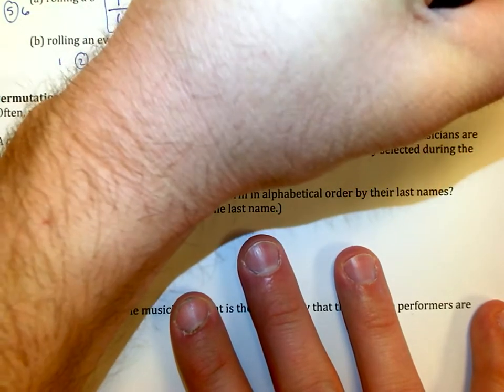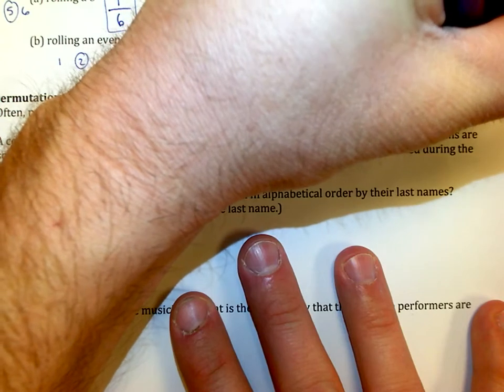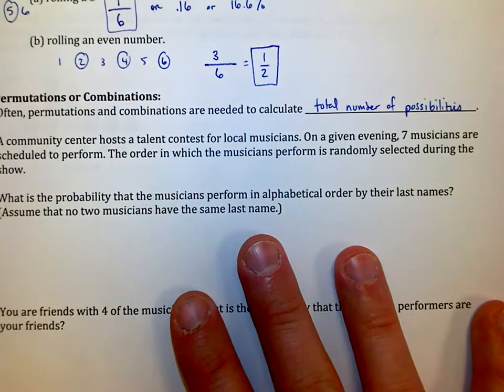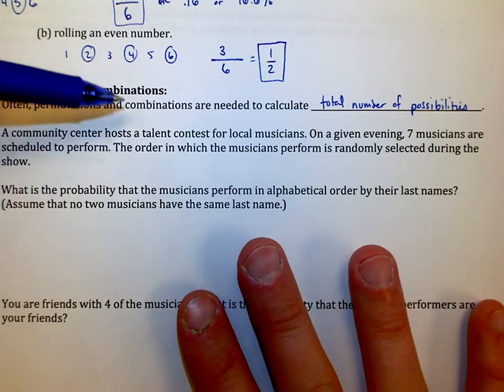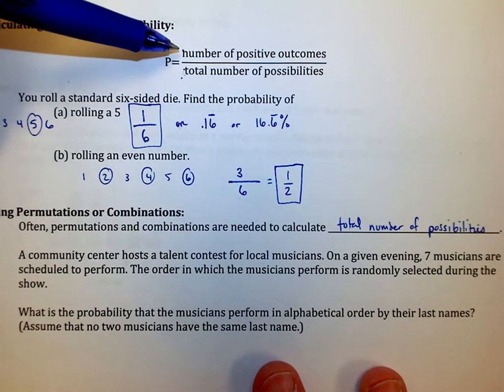For instance, often permutations and combinations are going to be needed to calculate parts of the fraction, sometimes even the number of positive outcomes.